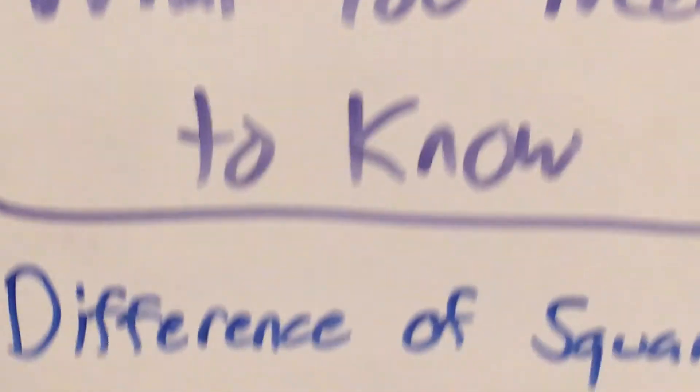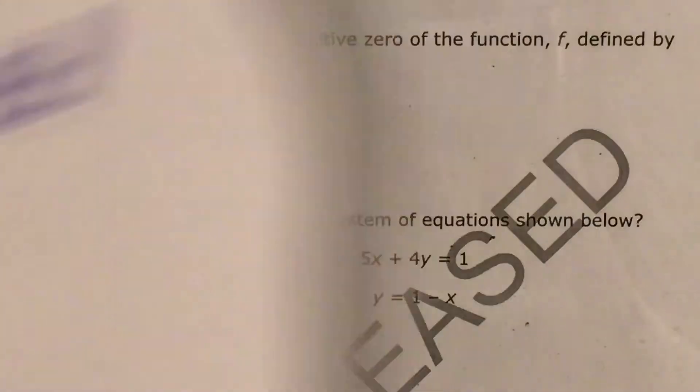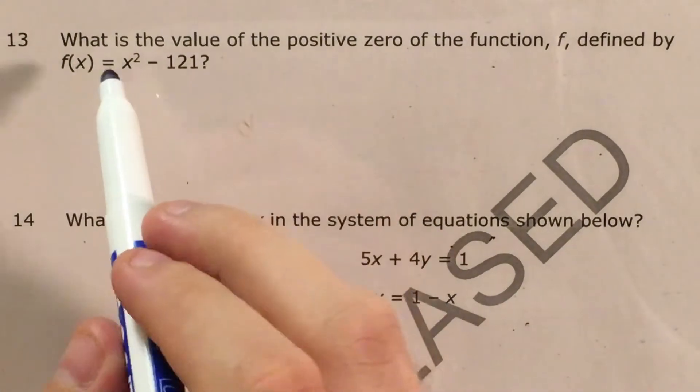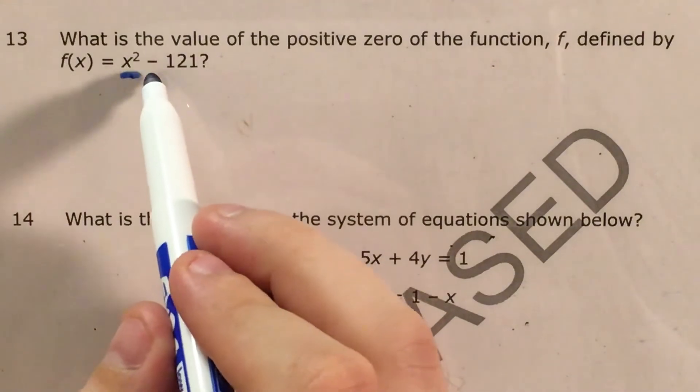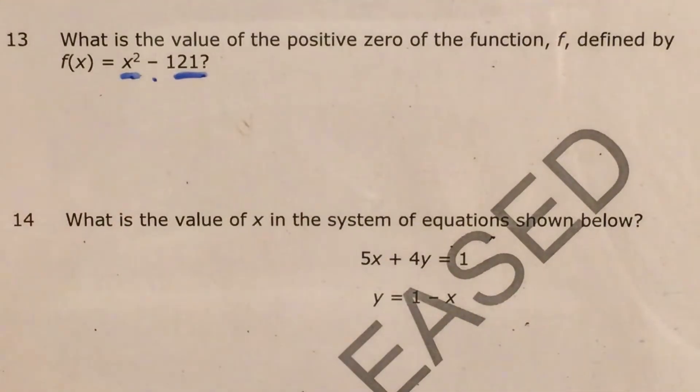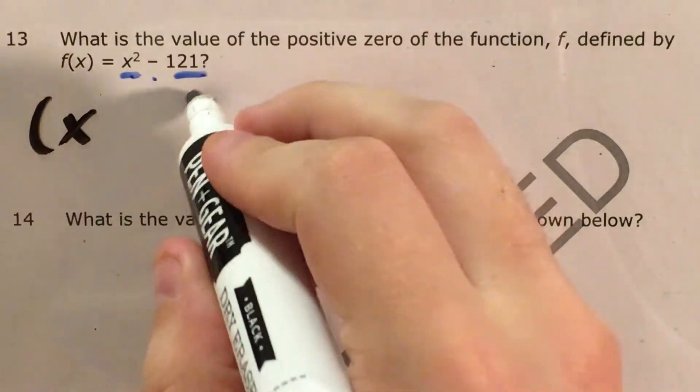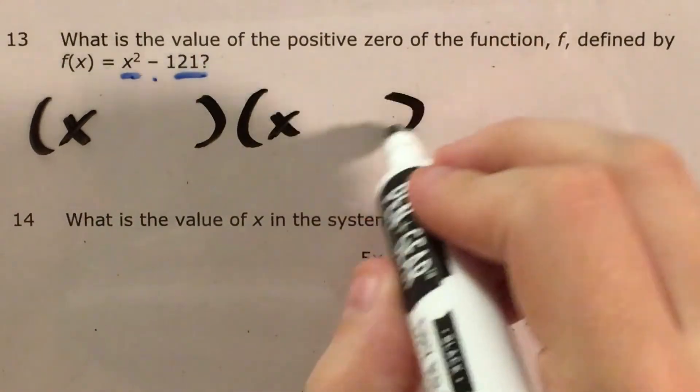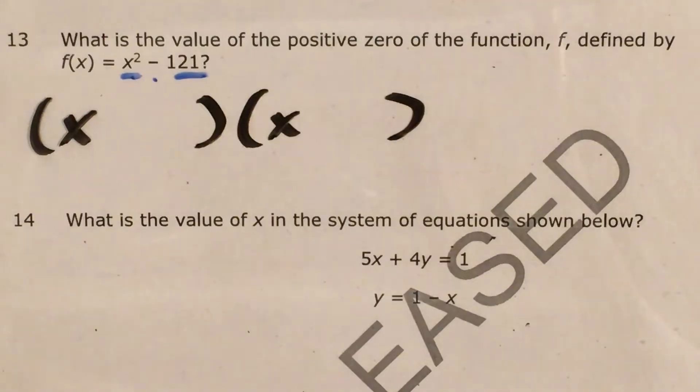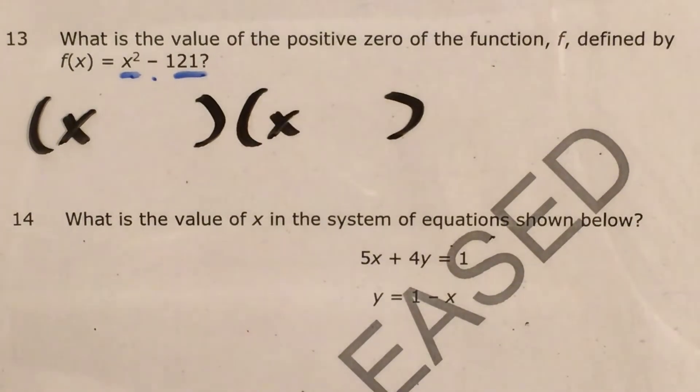The particular skill that this is testing is called difference of squares. The idea of difference of squares is that if I see that I have one square minus another square, the way that I will factor that into x plus or minus something times x plus or minus something is actually relatively straightforward as long as I can recognize this expression as a difference of squares.